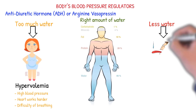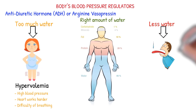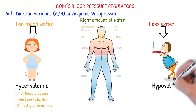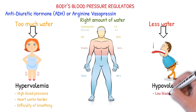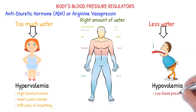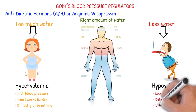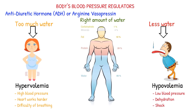If we have less water in the body, we'll become dehydrated. And if dehydration is severe, it will lead to decreased blood volume or hypovolemia. In hypovolemia, blood pressure is low, which consequently will lead to shock. So, the body requires balanced water.